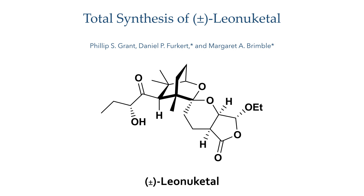Leonucital belongs to the labdane family of terpenoids and features a tetracyclic framework with high stereochemical complexity. The unique architecture of this compound is driven by its unusual biosynthesis, which features oxidative carbon-carbon bond cleavage in addition to the more usual ring formation and oxidation biotransformations. It was first isolated in 2015 by Peng and co-workers in the Chinese liverwort plant. Preliminary biological studies indicate that it is a potent vasorelaxant with an EC50 of 2.3 micromolars in potassium chloride-induced contraction of rat aorta.